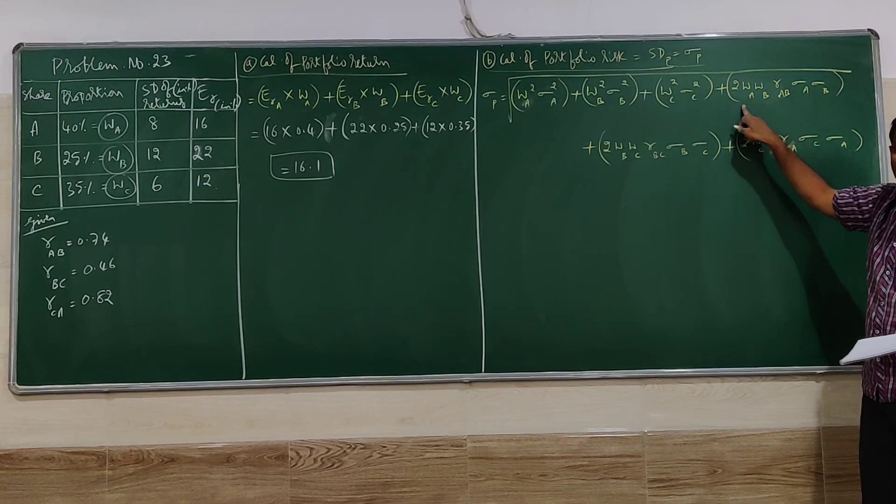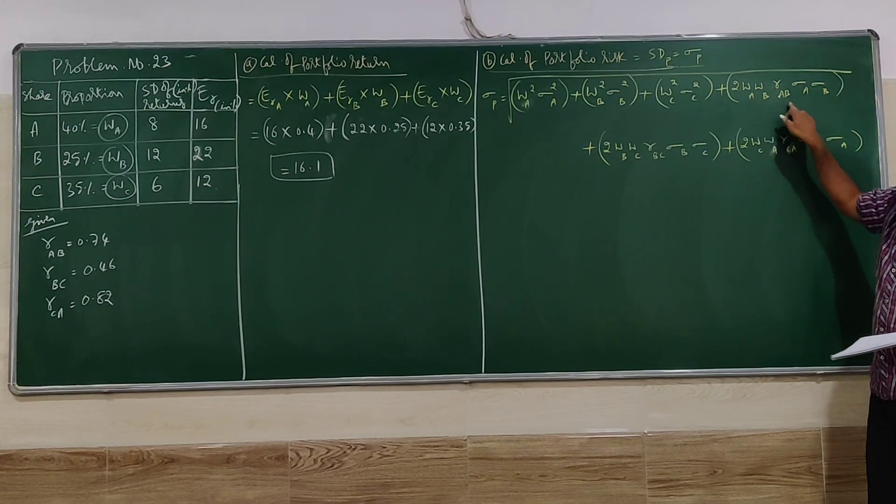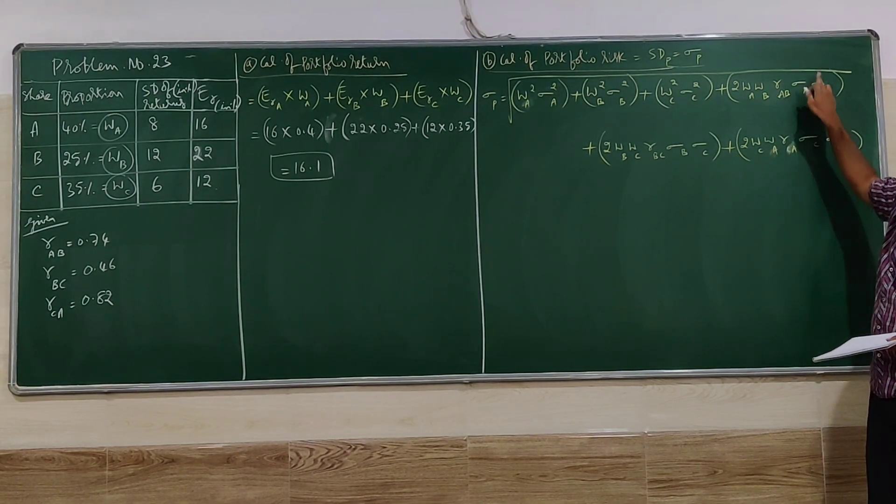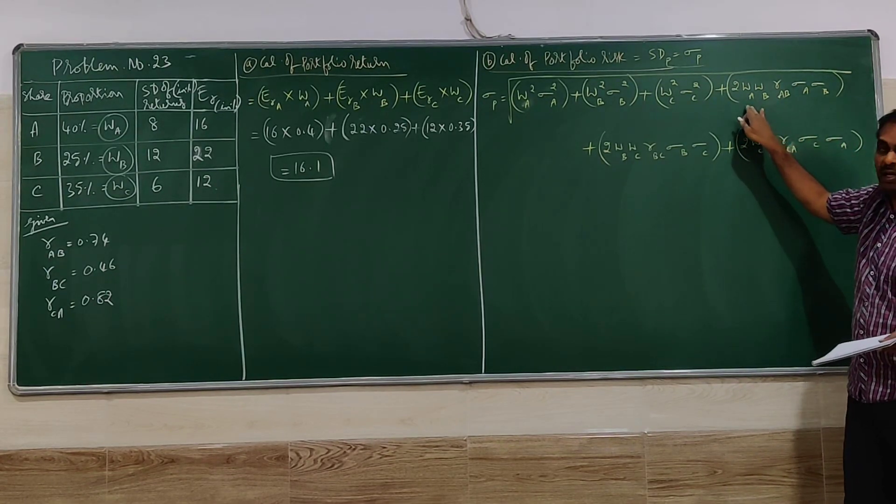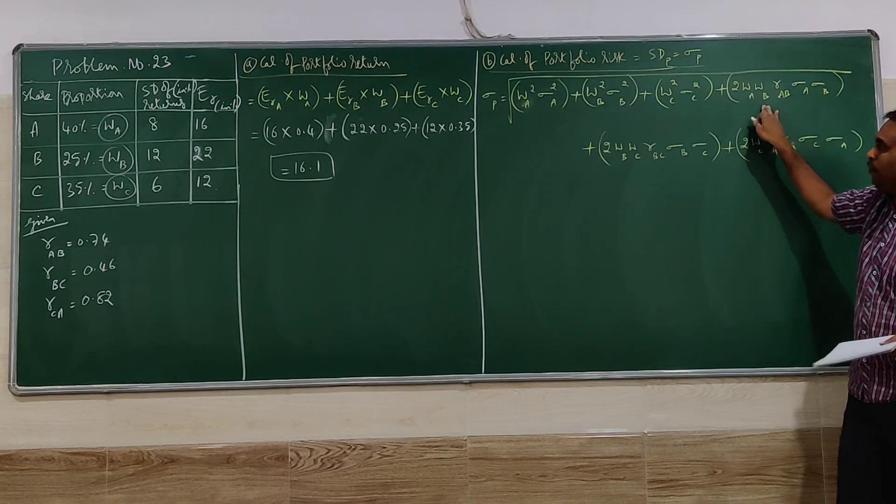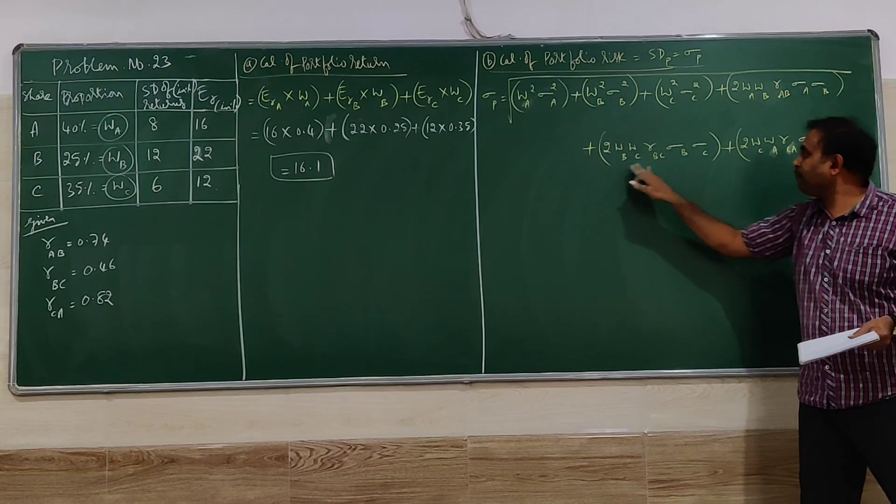Plus 2 into weight of AB, correlation of AB, standard deviation of A into standard deviation of B. This is one combination between A and B portfolio. This is between B and C portfolio.